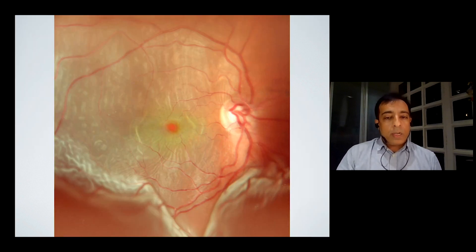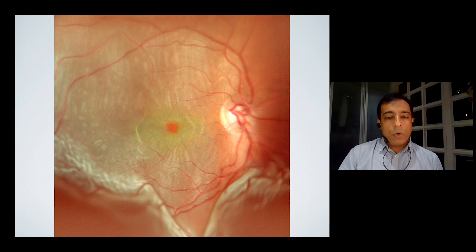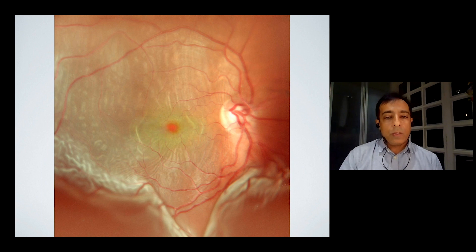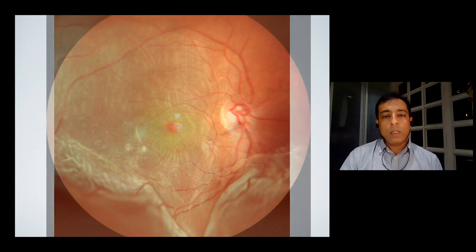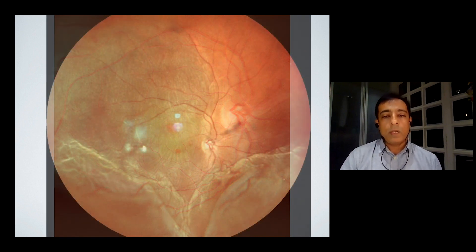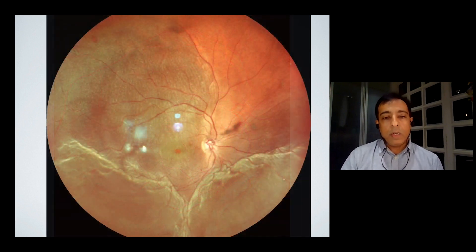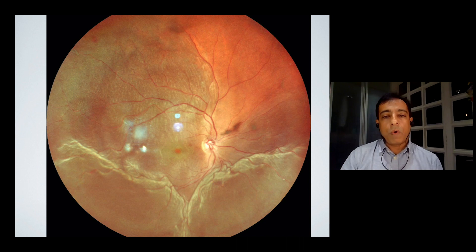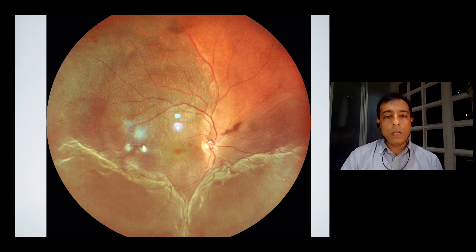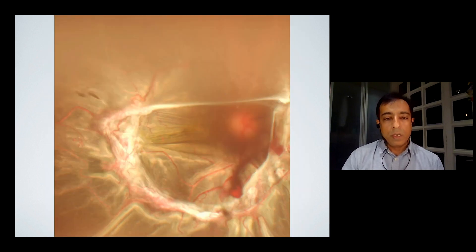Here you see a retinal detachment — a magnified view of the central area showing the plastic detachment with its folds. As you do the wide field component, you get the whole picture. It's like a single tree versus the forest as a whole, and it's a beautiful image that you can get out of these.